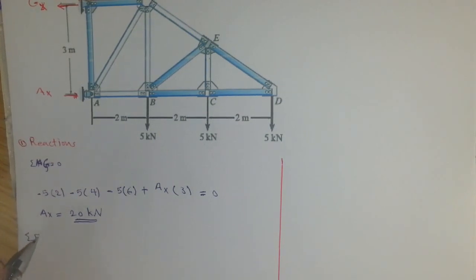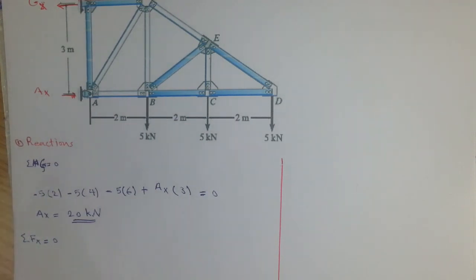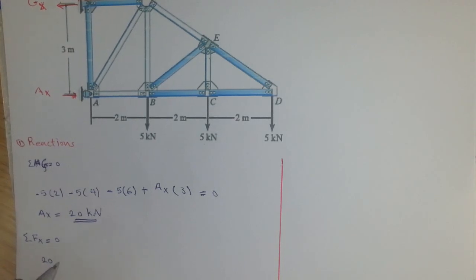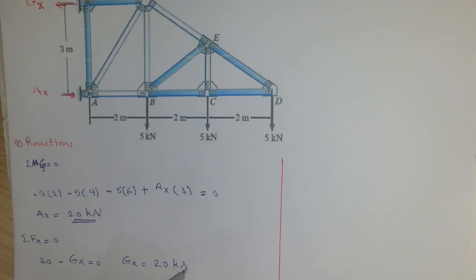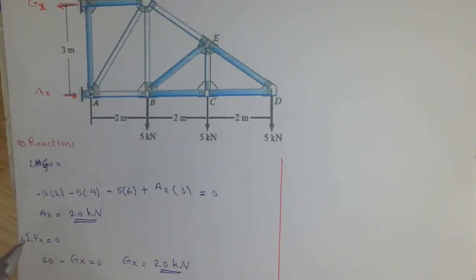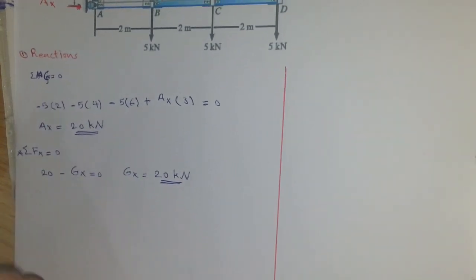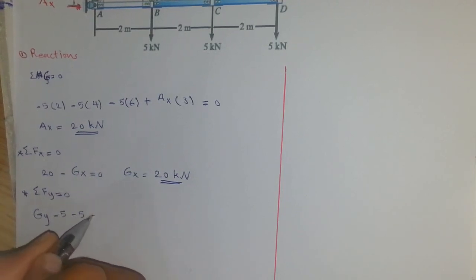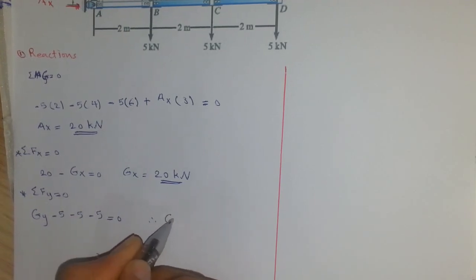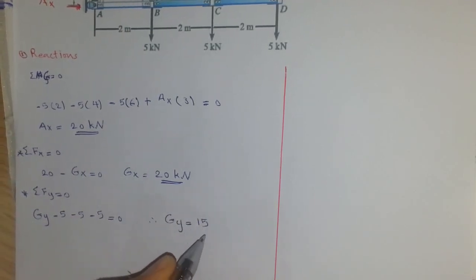Summation of forces in the x-direction equals zero: Ax of 20 kilonewtons minus Gx equals zero, hence Gx equals 20 kilonewtons. Applying the third equation of equilibrium, summation of Fy equals zero: Gy minus 5 minus 5 minus 5 equals zero, so Gy equals 15 kilonewtons.